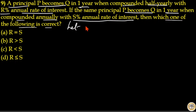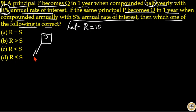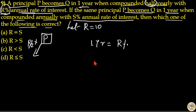Let us consider R as 10 percentage. Compounded half yearly means every six months interest is added to the principal. The annual rate is R percentage, meaning for one year the rate of interest is R percentage. For a half year — that is, for six months — R by 2 percentage is the interest rate.